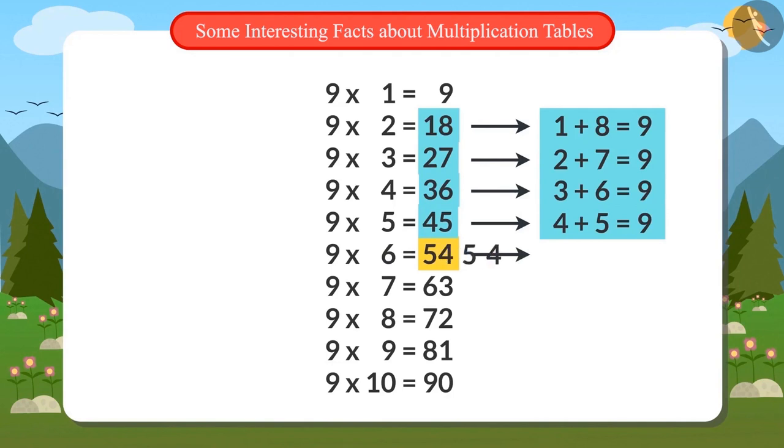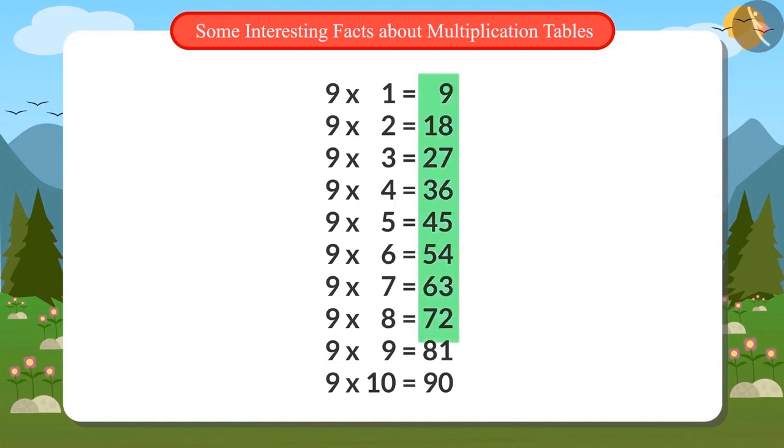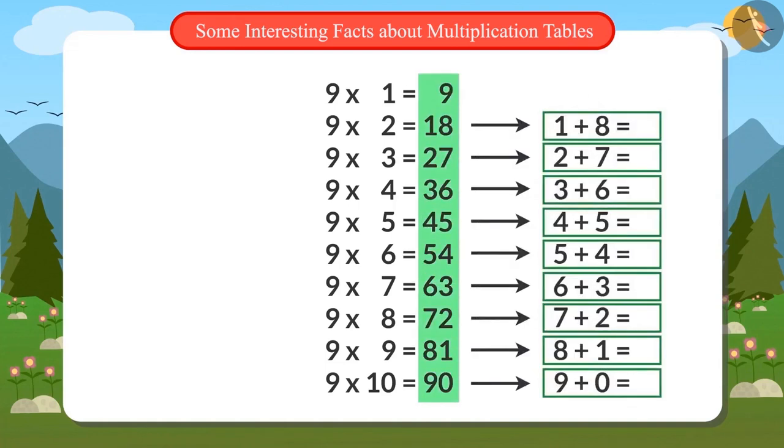Now, I will see the seventh number in the table of 9, that is 63. Adding the digits 6 and 3, the answer again is 9. Wow! This is interesting when we add all the digits in the multiplication table of 9, the answer is 9.